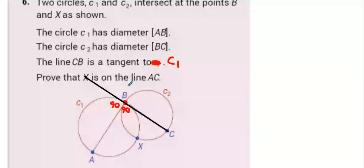So AB is the diameter of C1, and X is also a point on C1.